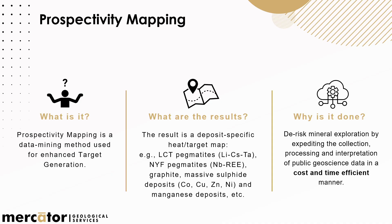Prospectivity mapping is just a data mining method — we mine data and we create targets using it. The result is essentially a heat map that can be commodity-specific, so we can look at a number of commodities. The ones listed here are just critical minerals that people are looking for currently, but there's really no limit to what you can look for. You feed your data set in and look for what you're looking for.